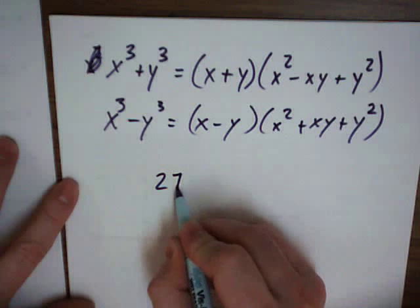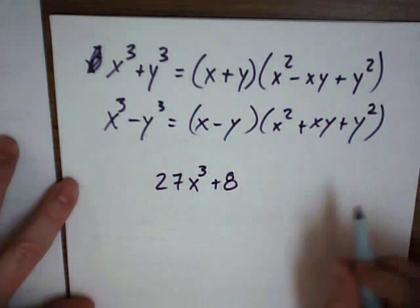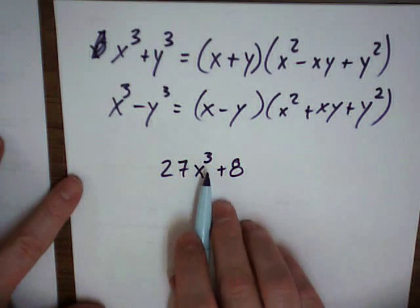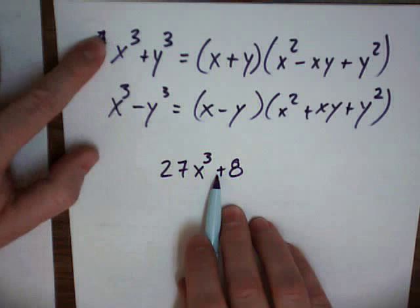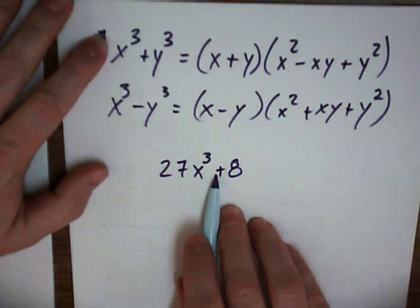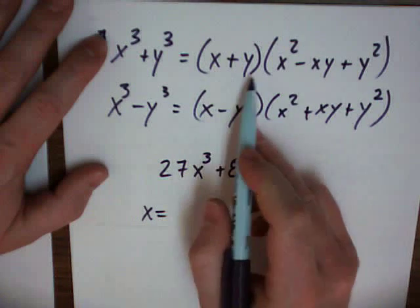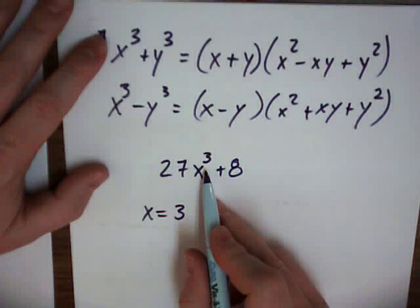The next one that uses this is 27x³ plus 8. And you use this because it's x cubed now, not x squared. So, it's a plus. So, we're going to use the plus one up here, the top equation or top formula. So, what would the x values be in all these? It would be a 3x, wouldn't it? 2.